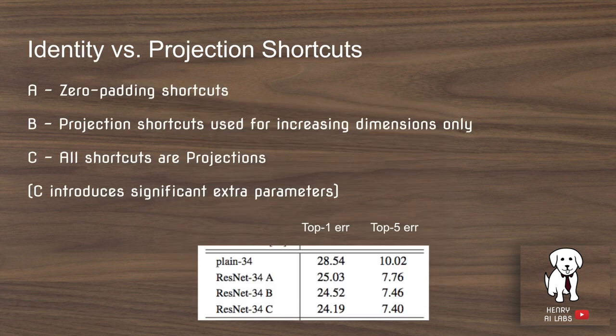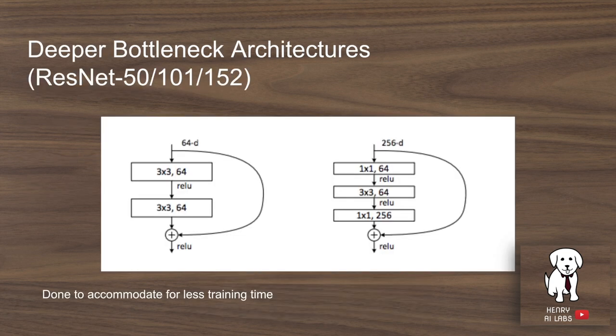They then test what happens when skipping ahead and the dimensions don't match: do you zero-pad it, or use one by one convolutions, and how frequently should you use them? They find that one by one convolutions, also known as projections, do provide a slightly significant performance boost, but at the cost of a significant number of extra parameters. For ResNet-50, 101, and 152, they extend the skip connection to skip ahead two layers rather than one — known as the bottleneck building block — to save training time.